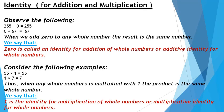Now let us see a few more examples. Here we are multiplying 55 with 1. When we find the product of 55 and 1, it remains the same number. If you see the next example, you are multiplying 1 with 7, which also leaves you with the same number. No change in the number. So when any whole number is multiplied with 1, the product is the same whole number. Therefore, 1 is the identity for multiplication of whole numbers, or the multiplicative identity for whole numbers.